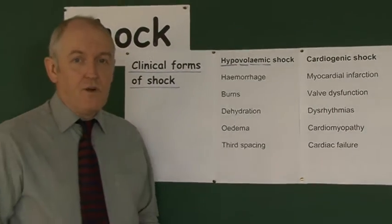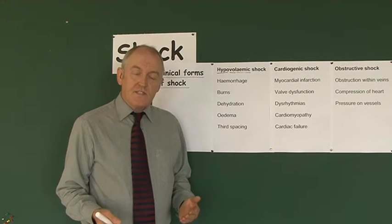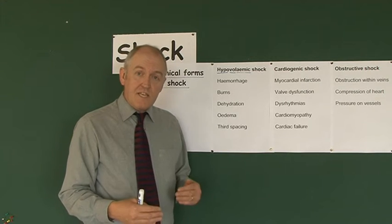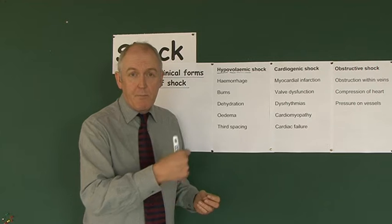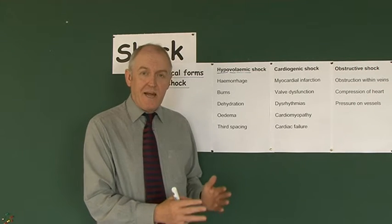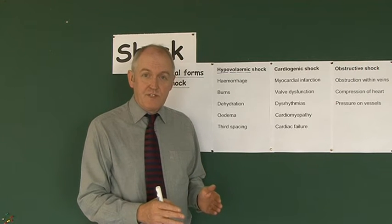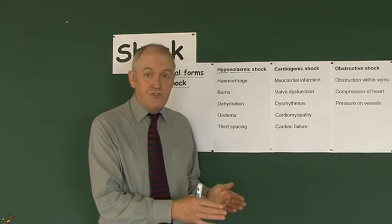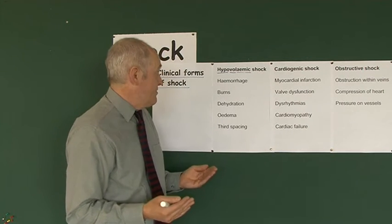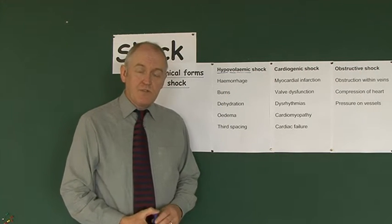Hypovolemic shock will happen any time the volume of the blood is too low. If the volume of the blood is low, that's going to reduce venous return — less blood going back to the heart. If there's less blood going back to the heart, less blood will be pumped out. The heart cannot pump out blood it has not received, so hypovolemia causes reduced venous return, which reduces cardiac output.